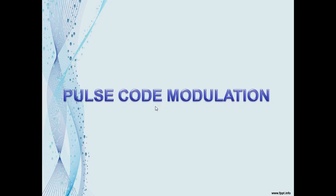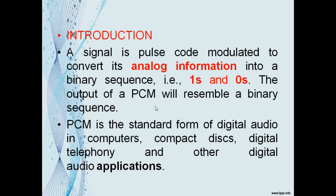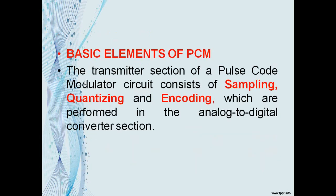Pulse Code Modulation: A signal is pulse code modulated to convert its analog information into a binary sequence of 1s and 0s. The output of a PCM will resemble a binary sequence. PCM is the standard form of digital audio in computers, compact discs, digital telephony, and other digital audio applications. The transmitter section of a PCM consists of sampling, quantizing, and encoding, performed in the analog-to-digital converter section.